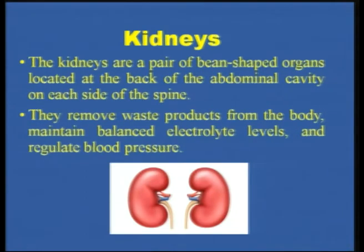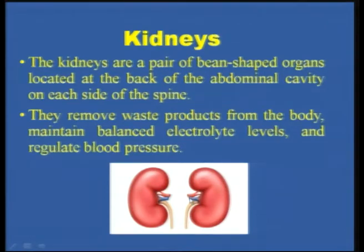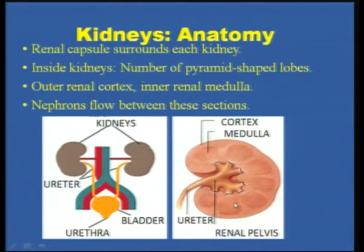Before going into nephrotoxicity, let us discuss the function and anatomy of the human kidney. The human kidneys are a pair of bean-shaped organs normally located at the back of the abdominal cavity on each side of the spine. They remove waste products from our body, maintain balanced electrolyte levels, and regulate blood pressure. Blood is supplied through the arteries and venous blood flows out of the kidneys. The renal capsule surrounds each kidney. Inside, there is the renal cortex and the renal medulla, with a number of pyramid-shaped lobes.